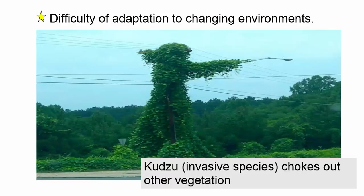If the environment changes — for example, an invasive species comes in, like kudzu — this could be devastating. Kudzu has big broad leaves and blocks sunlight from native plants. If native plants are all genetically identical and can be taken over by kudzu, the lack of genetic diversity means the species cannot adapt to the changing environment. This is a great disadvantage for any species lacking the genetic diversity to respond to environmental changes.